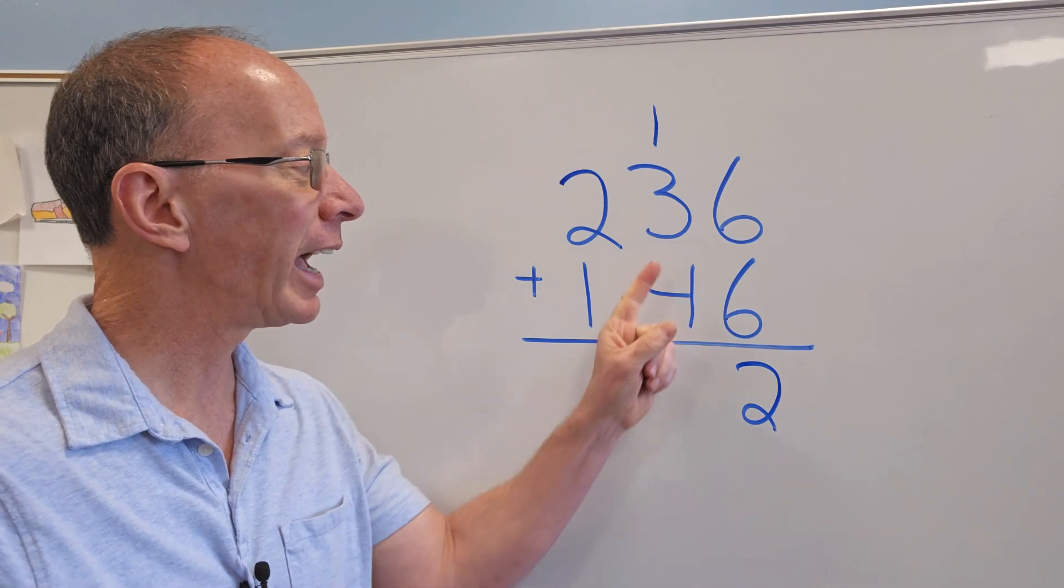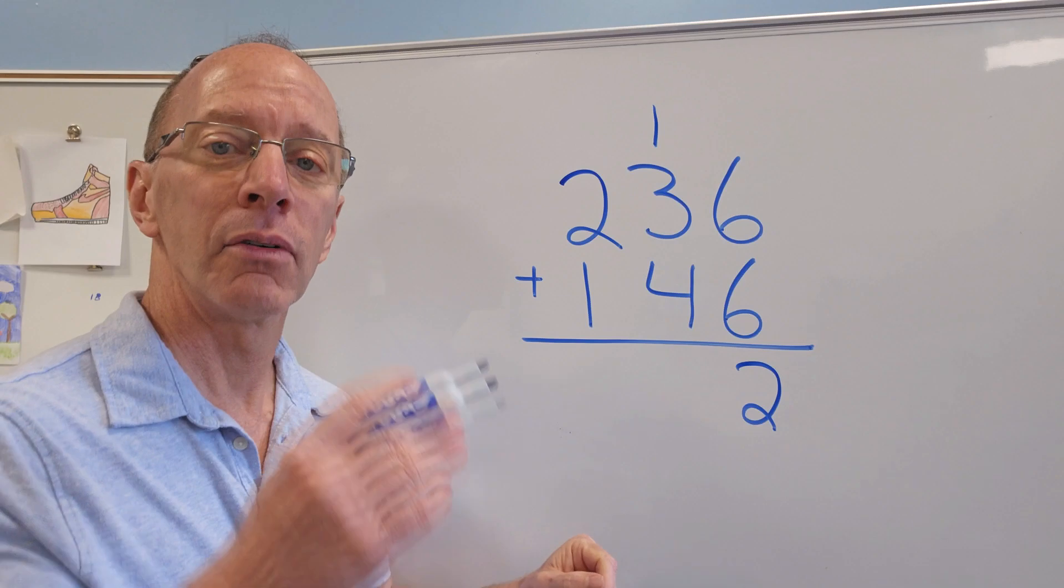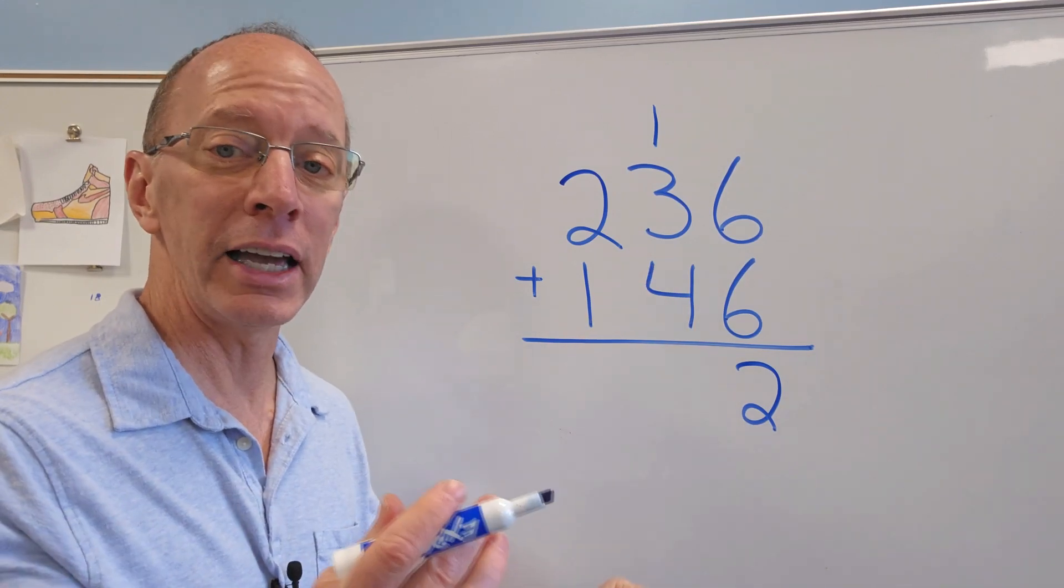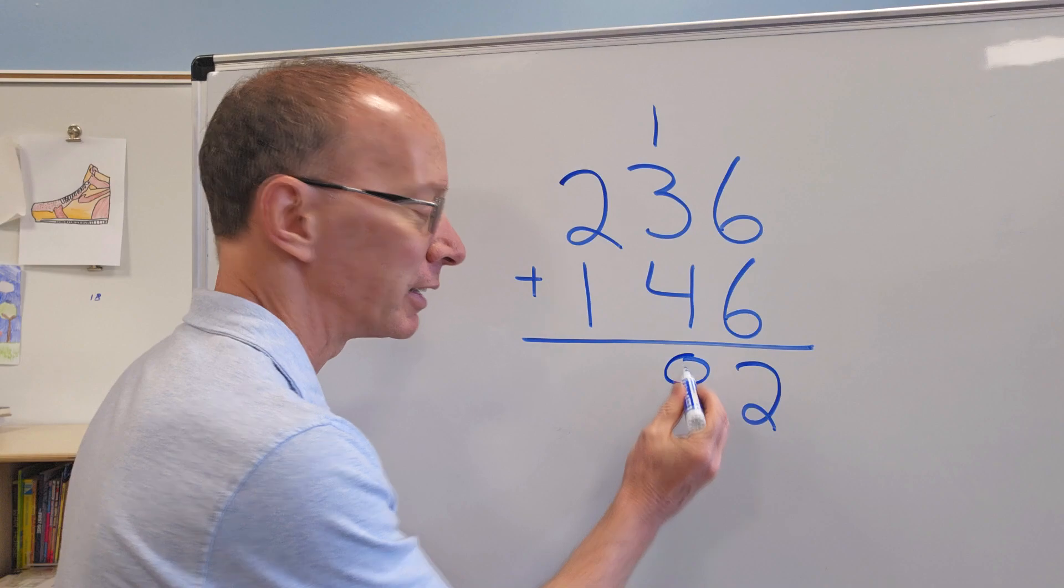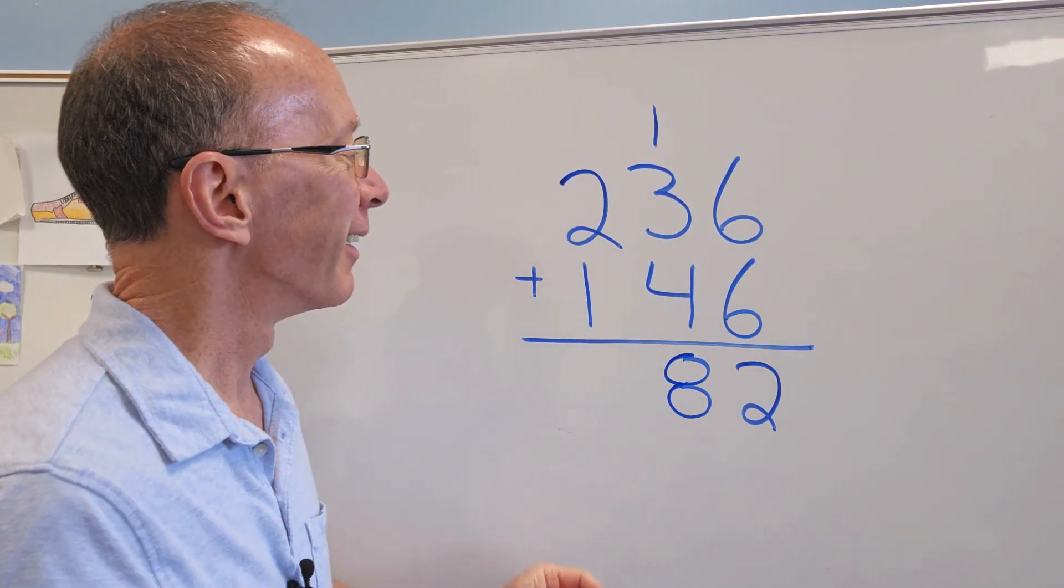So now I add the tens. I'm going to add three plus one is four. Four plus four equals eight. Eight is great. Sometimes eight is late. I'm kind of making some rhymes right there.